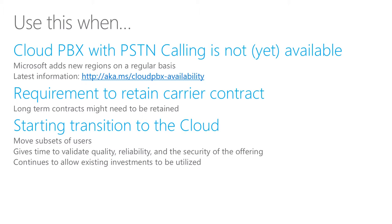Finally, if you want to slowly transition your existing users to Office 365, this is a great way to start. Enable hybrid, start moving subsets of users, take the time to validate the quality, reliability, and security of the offering, and then continue using your existing on-premises investments.